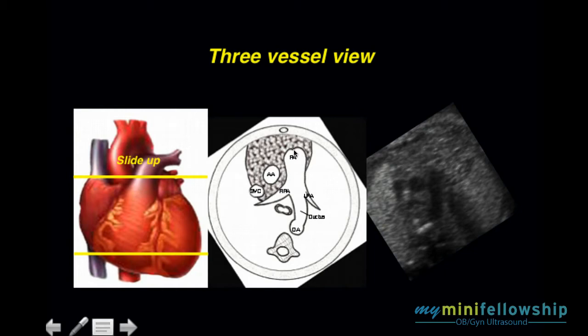When we see a great vessel branch, we're thinking pulmonary artery. One of the things we want to observe is a branch from the pulmonary artery. It doesn't matter whether we observe the right pulmonary artery, the left pulmonary artery, or the ductus arteriosus going back to the descending thoracic aorta — any of those branches identifies the pulmonary artery.